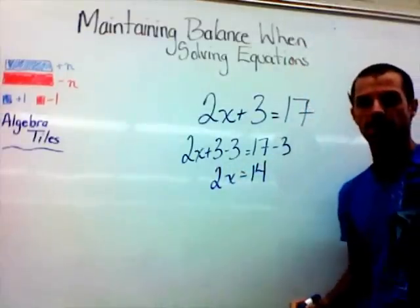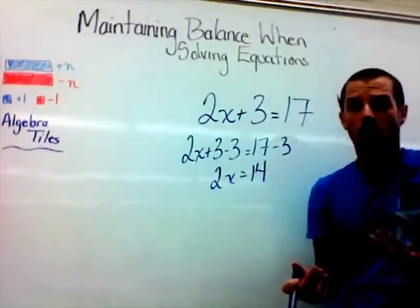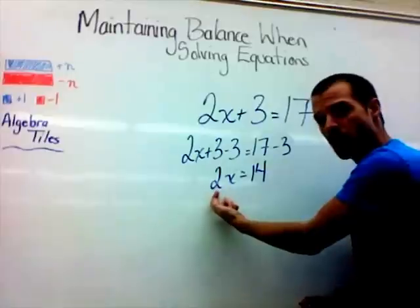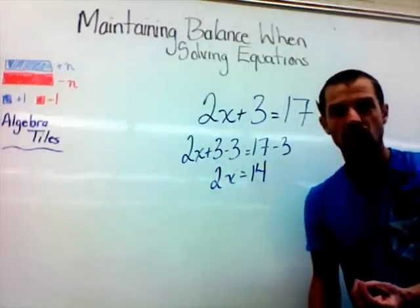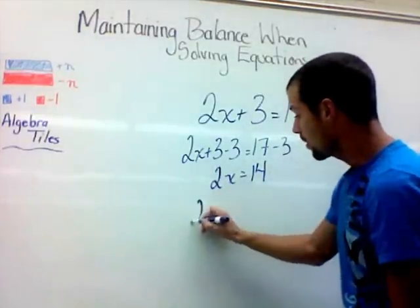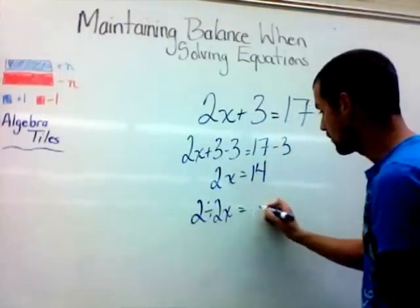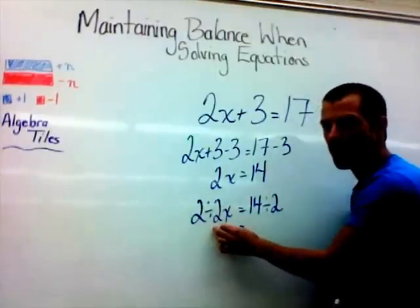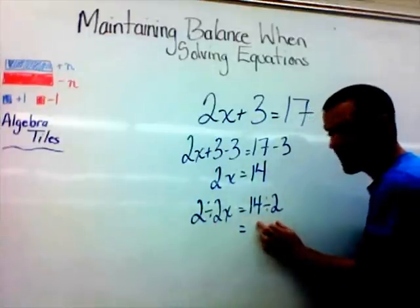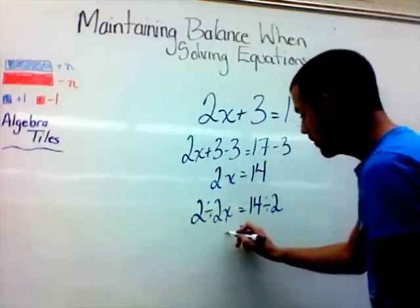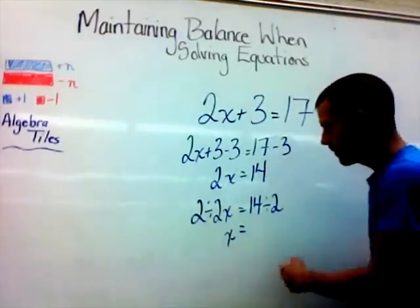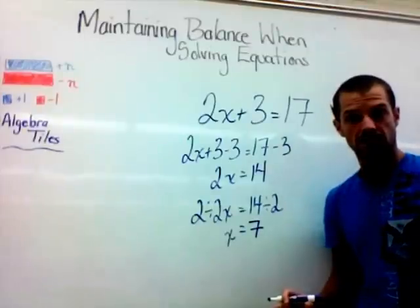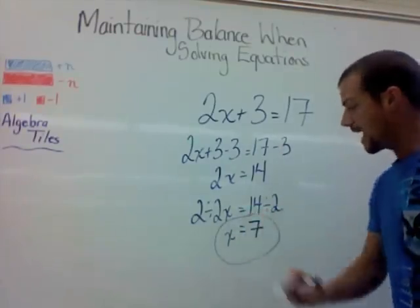Now we have 2x equals 14. A whole number right next to a variable means multiplication, so 2x means 2 times this number. The inverse — the opposite operation of multiplication — is division. So we divide both sides by 2: 2x divided by 2 equals 14 divided by 2. Because of BEDMAS, we do the division before the multiplication, so it cancels out. 2 divided by 2 leaves us with 1x, or just x. 14 divided by 2 gives us 7. So x equals 7.